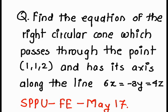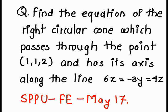First of all, we are going to find — this question was asked in SPPU Pune University for first year engineering in May 2017. Find the equation of a right circular cone which passes through a given point on the cone and has its axis along a given line. From this given information, we need to find an equation of a right circular cone.